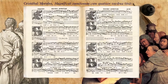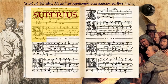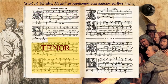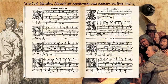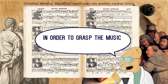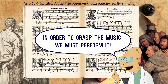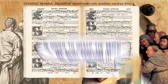In this publication from 1562, we see that the superius part — the highest part — and the tenor part are on the left page, and the altus and bassus parts are on the right page. Although all the notes of the piece are laid out in front of us, in order to grasp the music, we must perform it.